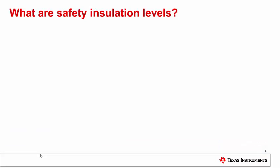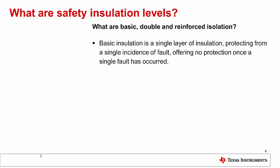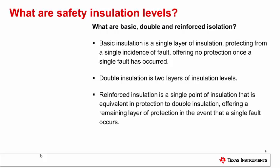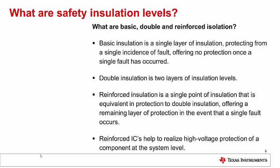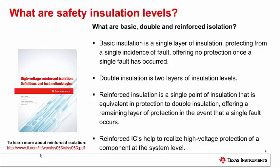Isolation terminology. What are safety insulation levels? Basic, double, and reinforced isolation. Basic insulation is a single layer of insulation protecting from a single incidence of fault, offering no protection once a single fault has occurred. Double insulation is two layers of insulation. Reinforced insulation is a single point of insulation equivalent in protection to double insulation, offering a remaining layer of protection in the event that a single fault occurs. Reinforced ICs help to realize high voltage protection of a component at the system level. To learn more, visit TI.com and look for the High Voltage Reinforced Isolation Definitions and Test Methodologies white paper, lit number SLYY063.